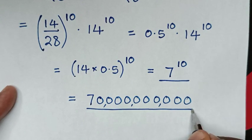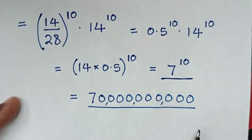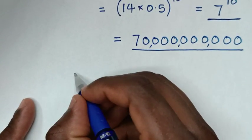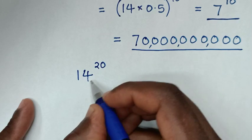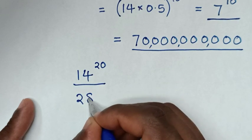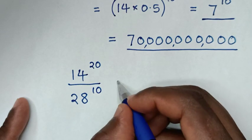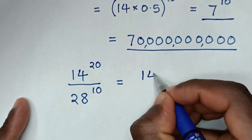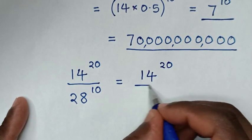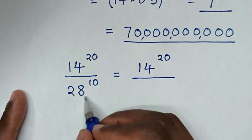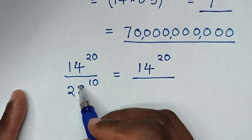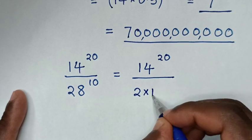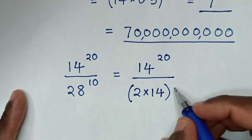So this is our answer. Or you can solve it another way, starting from our original problem, which is 14 power of 20 over 28 power of 10. In the numerator we write 14 power of 20, and in the denominator, to have the same base of 14, 28 is the same as 2 times 14, then bracket power of 10.